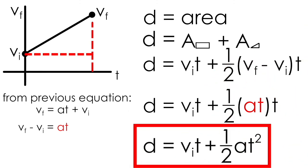Multiplying the two t's together results in d equals vit plus one-half at squared. Our second kinematic equation, which relates displacement, initial velocity, time, and acceleration.